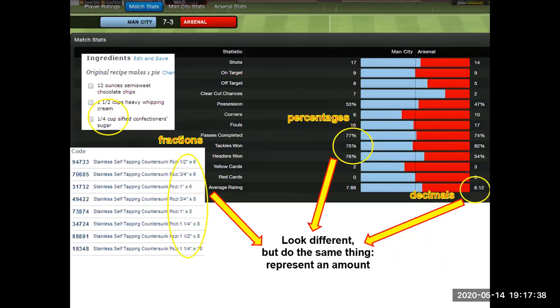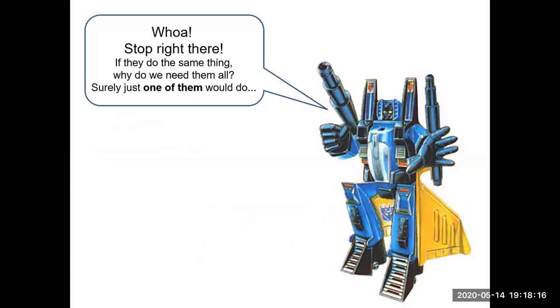They look different but do the same thing - they represent an amount. You have your fractions, you have your percentages, you have your decimals. They do the same thing but they all represent an amount. You can use fractions to represent the amount of ingredients, use percentages to present information, and decimals as well. It's all representing the same amount.